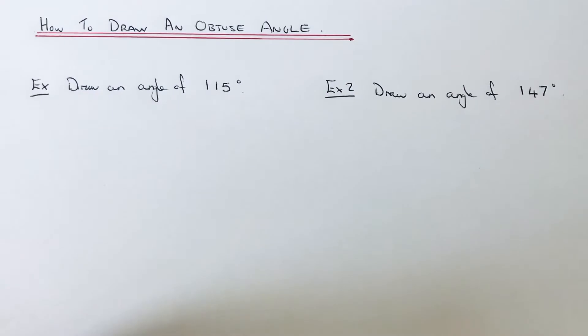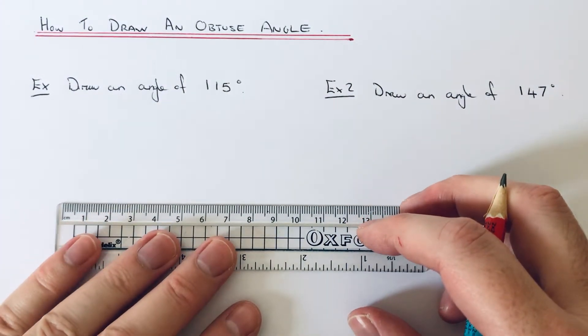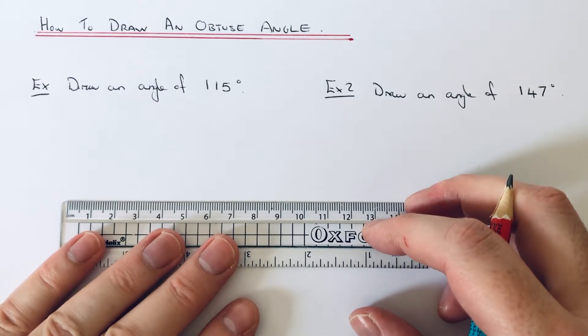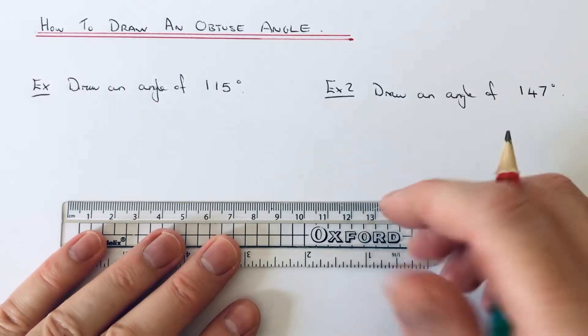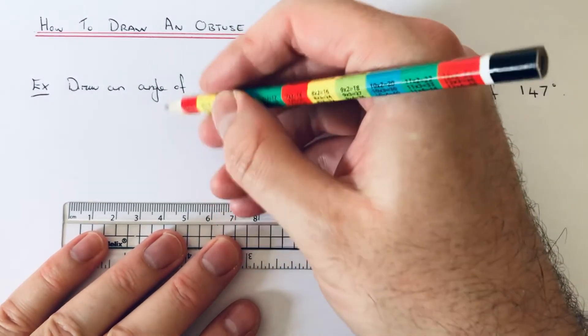So to do this, you'll need to have a ruler and a protractor. So let's have a look at our first example. I've got to draw an angle of 115 degrees. The first thing I'm going to do is draw a baseline, so we can use our protractor to measure the angle from. I recommend doing a line about five centimeters long. You can make it a little bit bigger if you want to.